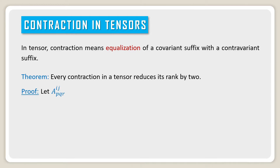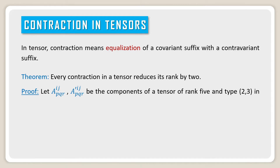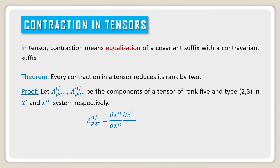Proof. Let us consider a^ij_pqr and a'^ij_pqr be the components of a tensor of rank 5 and type (2,3) in the x-system and x'-system respectively. Therefore,